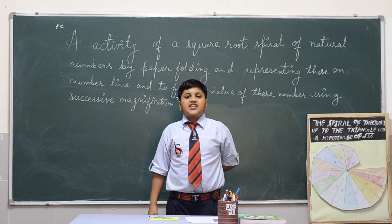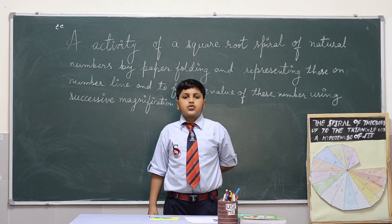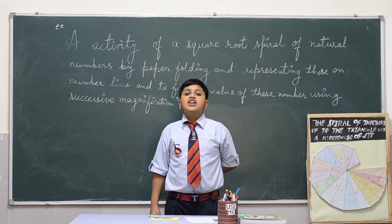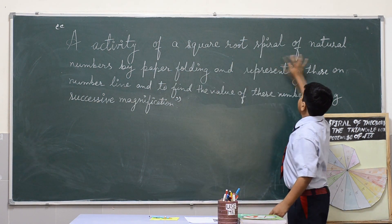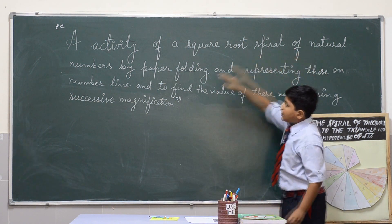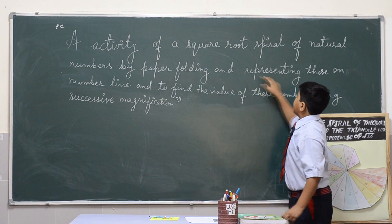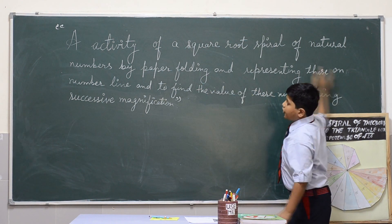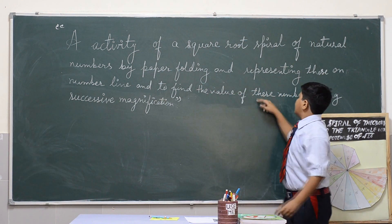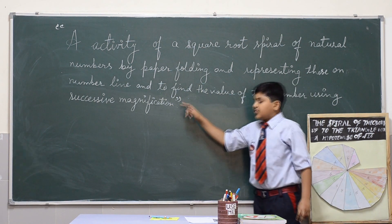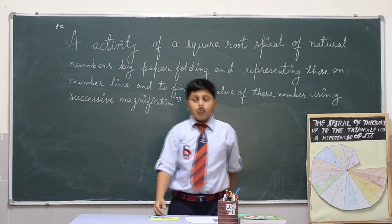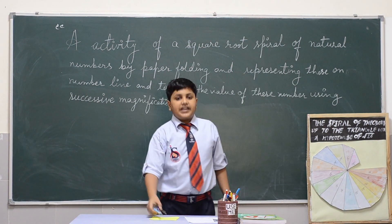I will show you about the activity of representing natural numbers and irrational numbers on a number line, and finding the value of these numbers using successive magnification. Now I will show you how to make it happen.